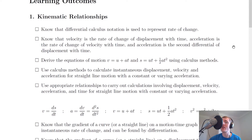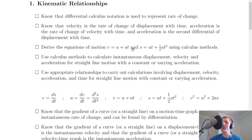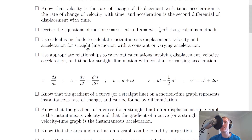Know that velocity is the rate of change of displacement with time, acceleration is the rate of change of velocity with time, and acceleration is the second differential of displacement with time. Remember those definitions are shown in the relationships, i.e. the equations that you use. You need to be able to derive the equations of motion v equals u plus at and s equals ut plus a half at squared using calculus methods. It doesn't hurt to be able to derive the third one as well, just in case. You also need to be able to use calculus methods to calculate instantaneous displacement, velocity, and acceleration for straight line motion with a constant or varying acceleration.